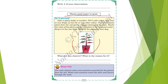What did you observe? What is the reason for it? The roots absorb water and nutrients essential for the plants from the soil. Water and nutrients reach the stem and leaves through the roots.